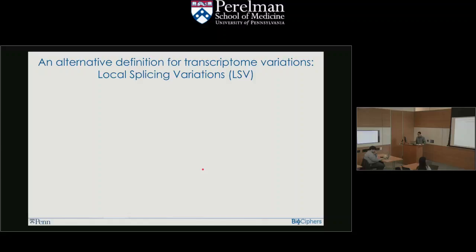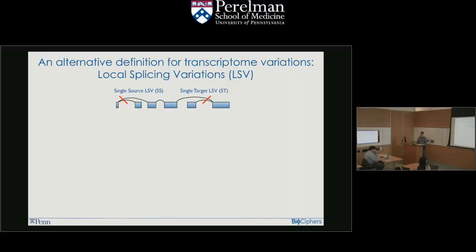To bridge the gap between those two things, what we came up with in a paper published in eLife was an in-between: bridging the simplified views of splicing events and full isoforms — we called it local splicing variations (LSVs). It's rather simple and intuitive. In a gene splice graph where rectangles are exons and connecting edges show which exon is spliced to which, every time you see a split coming out of an exon that's a 'single source' LSV, and into an exon is a 'single target' LSV.